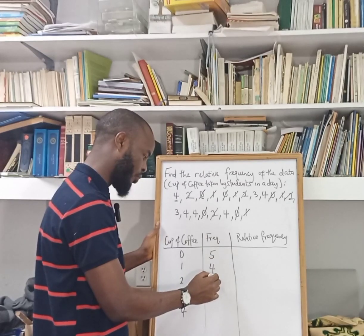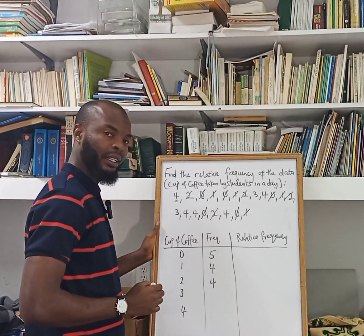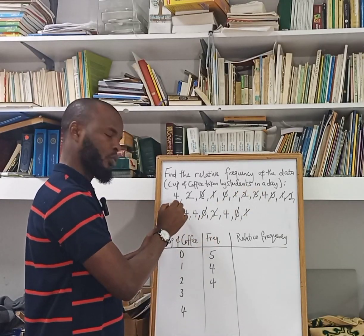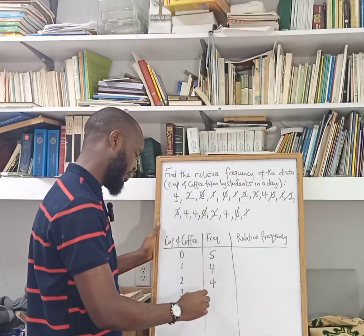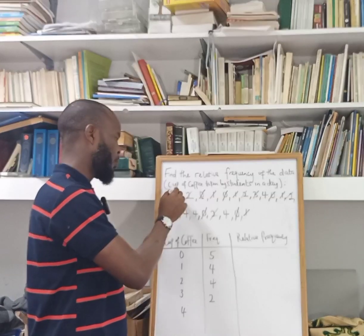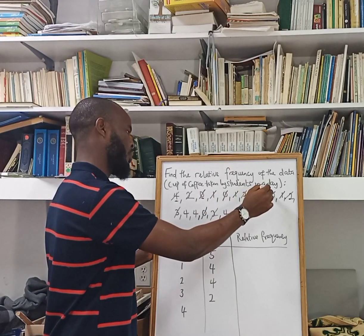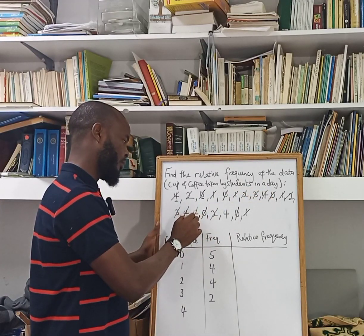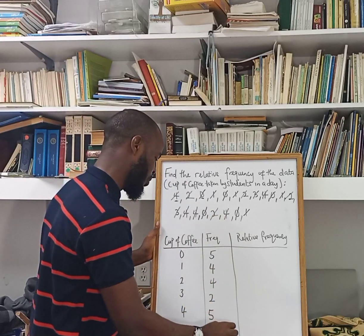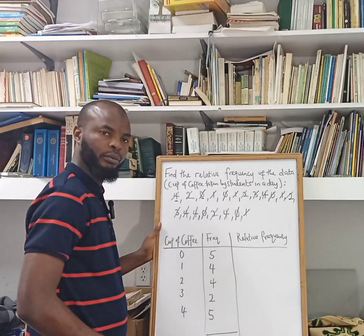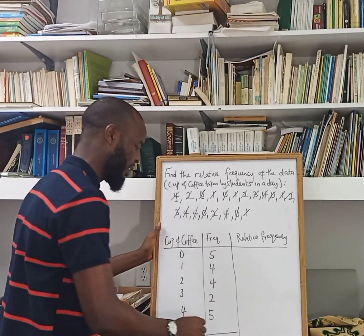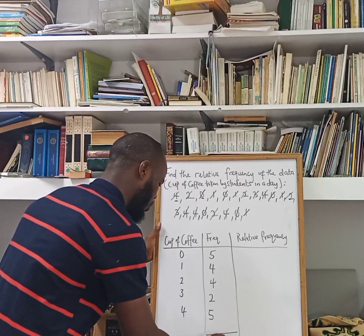What about three cups? Counting: one, two. So we have two students taking coffee three times. What about four cups? Counting: one, two, three, four, five. So the frequency for four cups is five. The total is five plus four plus four plus two plus five, which gives us 20.